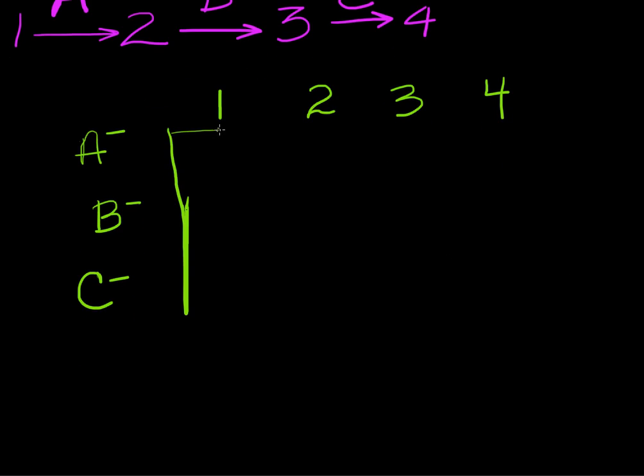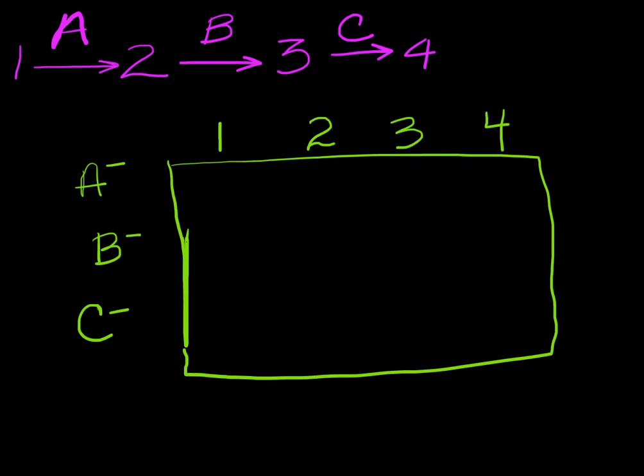So we already know that metabolite four is going to be able to rescue everything. That's the end product of this whole process. So this should rescue A minus strain, B minus strain, and C minus strain. That's because it's our end product.